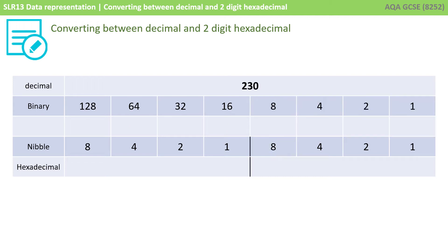So let's take a bigger number now — 230. The process is exactly the same. Pause the video for a moment and see if you can work this one through on your own. The first thing you should have done is written out that decimal number in binary. So here it is in binary.